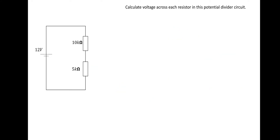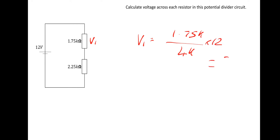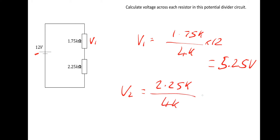Here's another example using the same method. Voltage one is 1,750 divided by the total of 4,000, multiplied by the supply of 12, which gives 5.25 volts. For V2, you can either subtract 5.25 from 12, or do 2,250 divided by 4,000 times 12, which gives 6.75 volts.